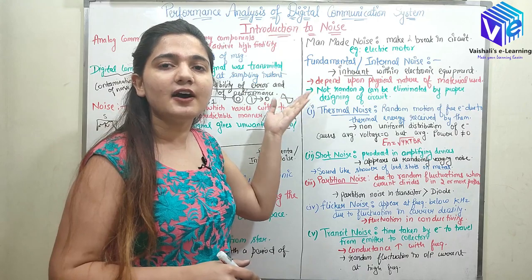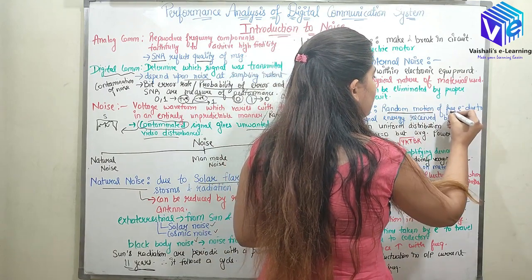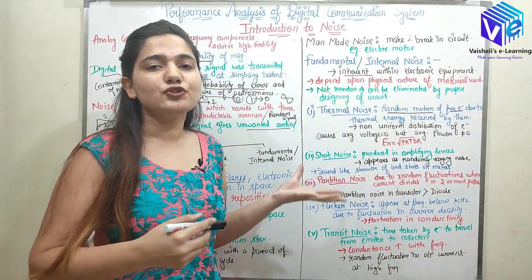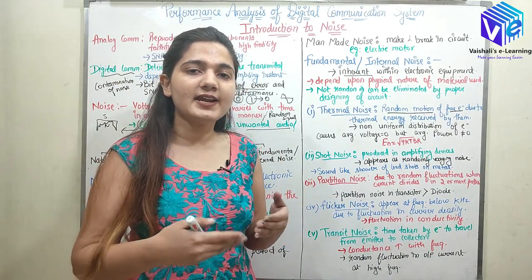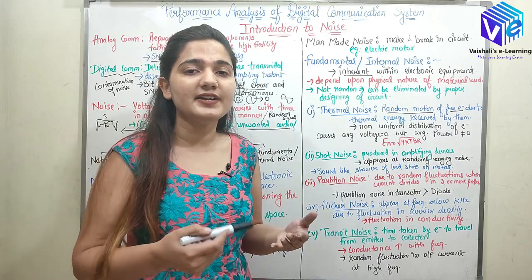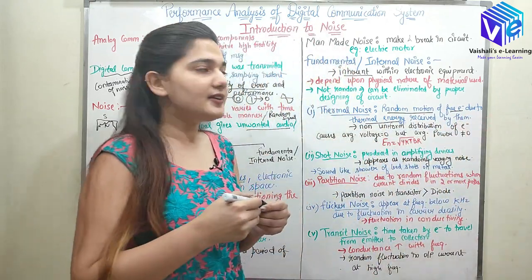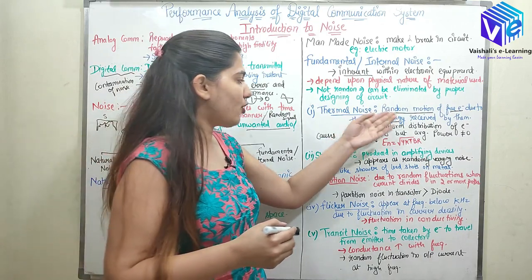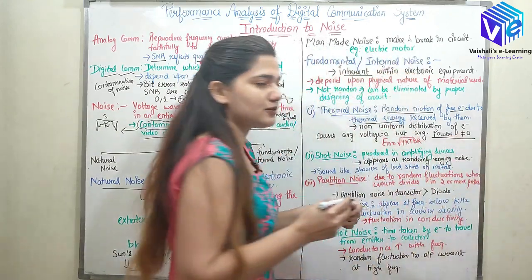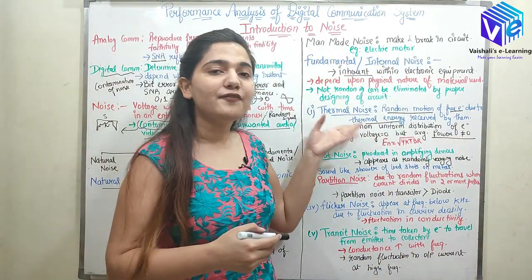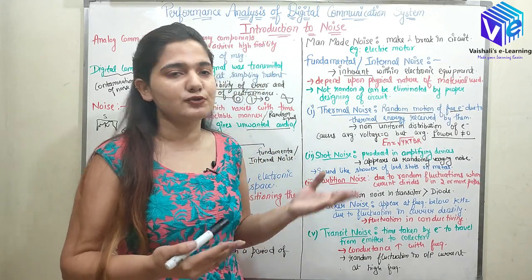The first classification of internal noise is thermal noise. Thermal noise is generated due to the random motion of free electrons. Inside any material, electrons possess random motion because of thermal energy received by them. Due to this random motion of free electrons, there is a power which is not equal to zero. The average voltage would be zero but there is an average power component which produces this thermal noise.